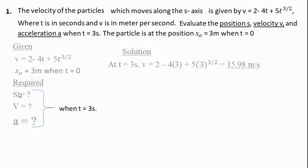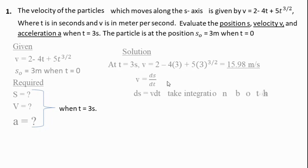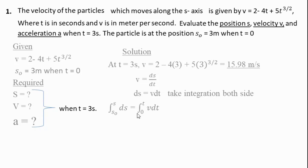Next, for position, velocity is the first derivative of distance with respect to time. So we can write ds = v·dt. The next step is to take the integration of both sides, from s-naught to s on the left, and from zero to t on the right, giving us the integral of v dt.